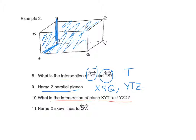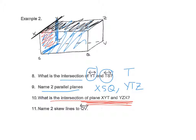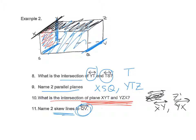The intersection of planes XYT and YZX: when two planes intersect you get a line. Shading both planes, where they come together is the line YZ — so write line YZ or ZY. Finally, name two skew lines to QV: skew must be non-coplanar and non-intersecting. The line XS and the line YT are both skew to QV.